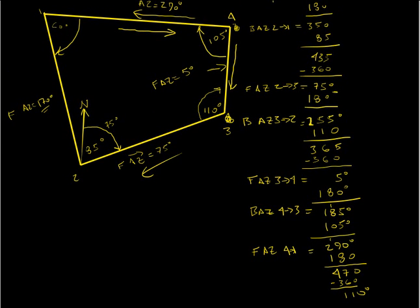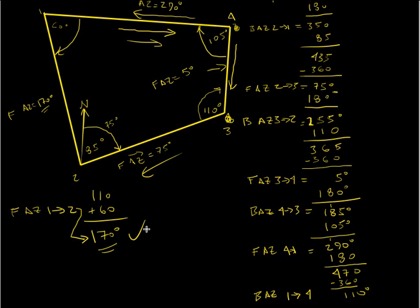This is the azimuth going this way, going this way, is 110 degrees. That's from back azimuth 1 to 4. So now the forward azimuth 1 to 2 should be what? 110 degrees plus 60, which is 170 degrees. So the forward azimuth 1 to 2 is 170 degrees. So we can check that. We did our math correctly. We went all the way around, started off with 170, we finished with 170.